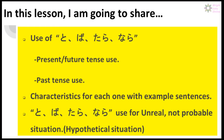In this lesson I'm going to share three things. One: the use of To, Va, Tara, and Nara — we'll look at those conditions from two angles: present/future tense use and past tense use. The second is characteristics for each condition with example sentences, so you'll have a clear and simple understanding. The third is if-condition for unreal or not probable situations — something did happen and I wish it didn't, or something didn't happen and I wish it did.